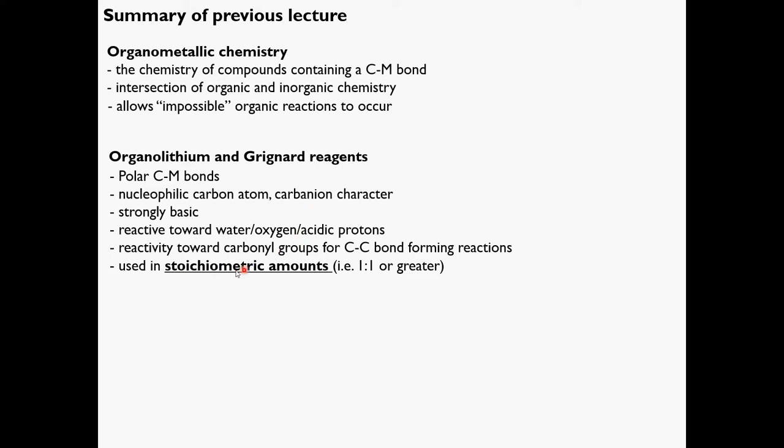One potential disadvantage of using organolithium and organogrignard reagents is that we need them in stoichiometric amounts — at least a one-to-one ratio with the substrate. That presents problems in terms of by-products, side reactions, and economy of scale if used in industrial or pilot plant processes. We don't want to be generating or using significant amounts of reactive reagents.